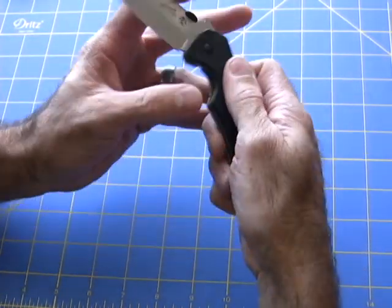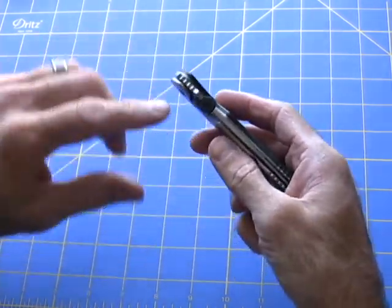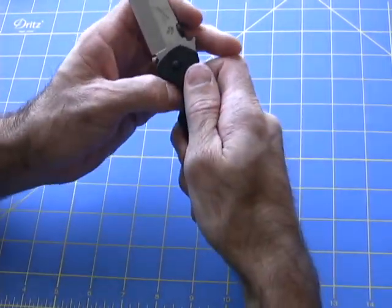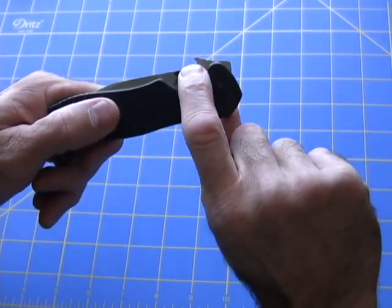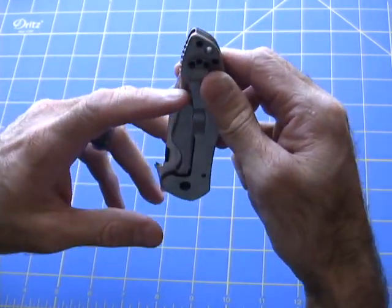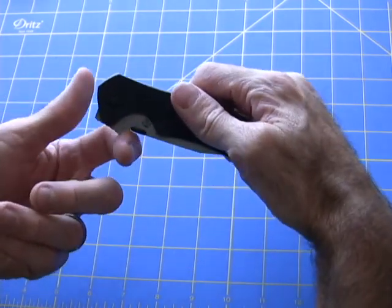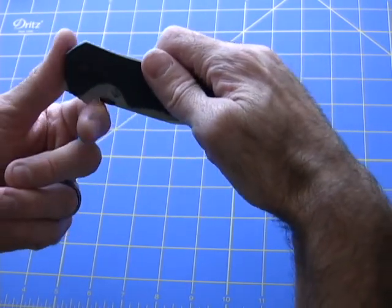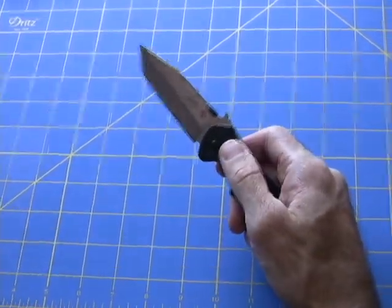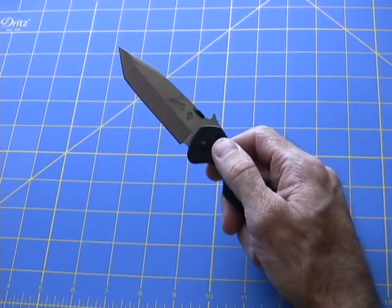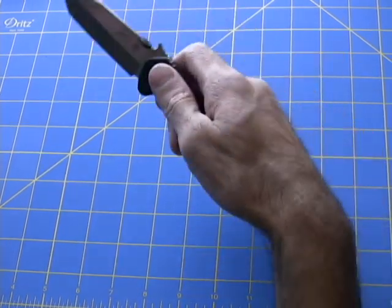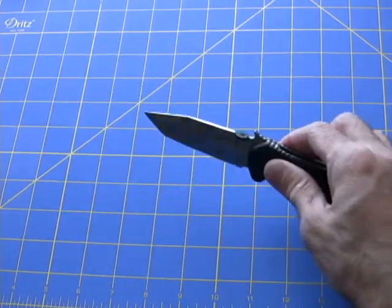There's no assist to this blade, it's all manual opening. You can use the thumb disc, which is most common. Emerson's design features something called the wave, this little piece right here. It goes into your pocket in tip-up carry, and when you pull it out, it catches on your pocket and opens the blade. This gives you very fast opening. When you learn to pull your blade from your pocket this way, it's actually faster than any assisted mechanism. As soon as it clears the pocket, it's open.